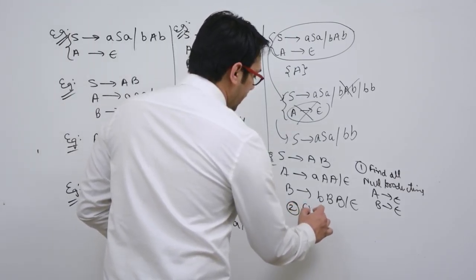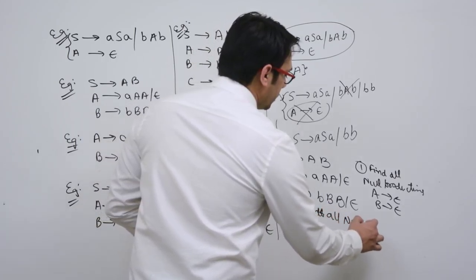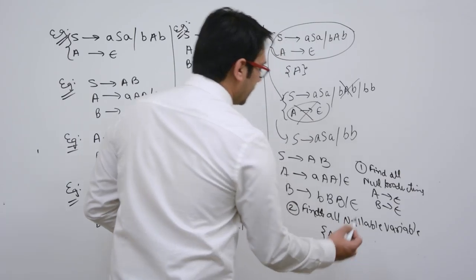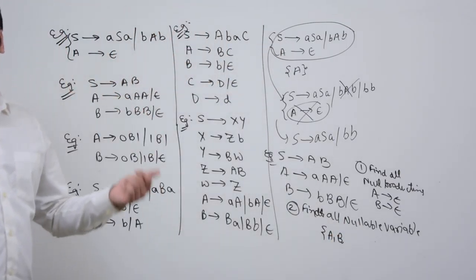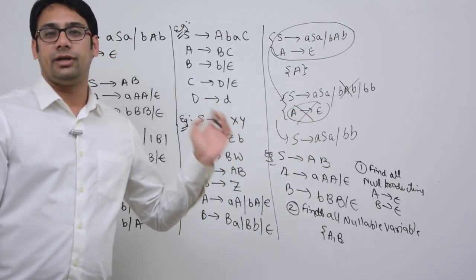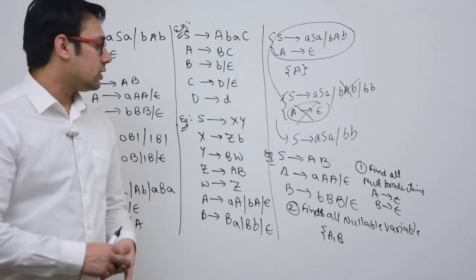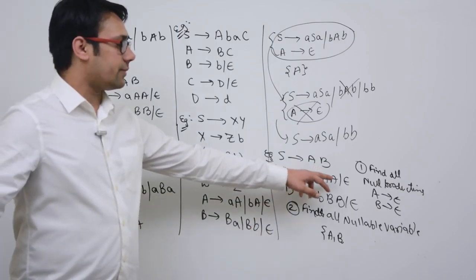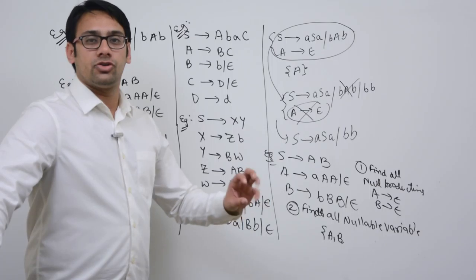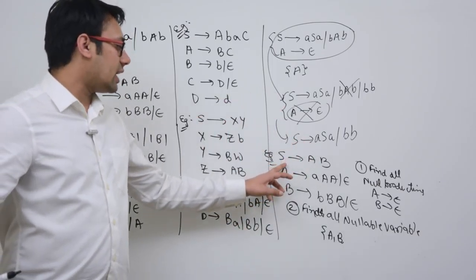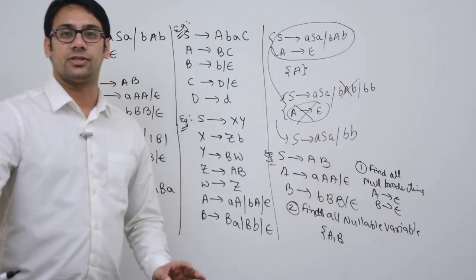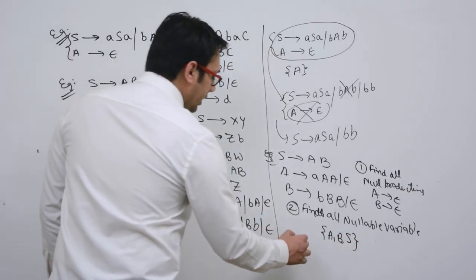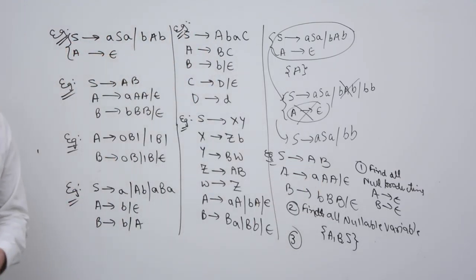The second step is to find all nullable variables. The nullable variables are A and B. Now look at each production and see if any right-hand side is made up of only nullable variables A and B. The production S derives A B has a right-hand side made up of only A and B, so you can replace A by epsilon and B by epsilon. Therefore, S is also a nullable variable — the start symbol can also generate epsilon.